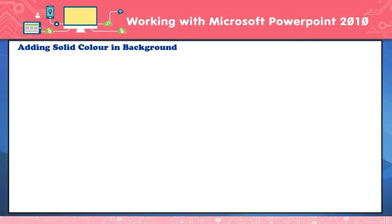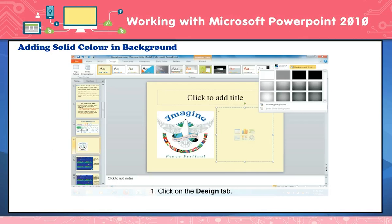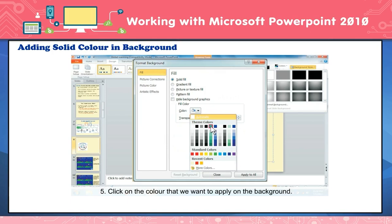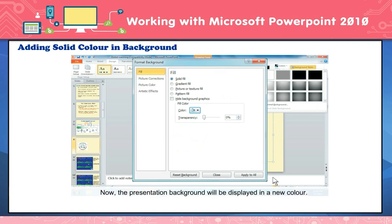Adding solid color to the background. To add solid color to the background: click on the Design tab. Click on Background Styles. Click on Format Background. The Format Background dialog box will appear. Click on the Color button. A color palette appears. Click on the color you want to apply to the background. Click Close to apply the color to the current page, or click Apply to All to apply the color to all slides. The presentation background will now be displayed in the new color.